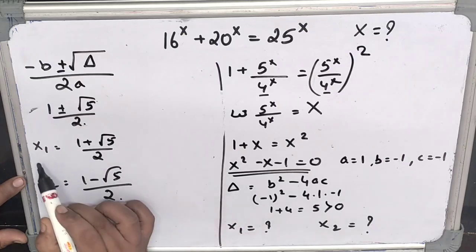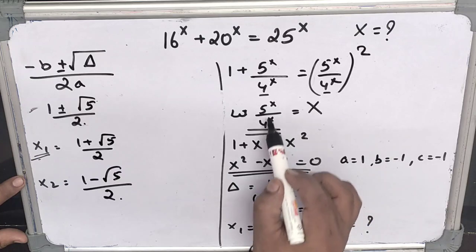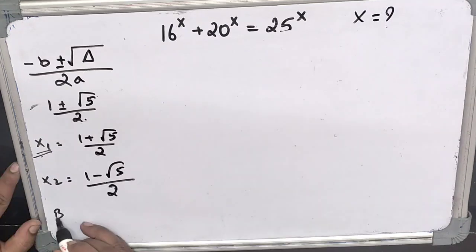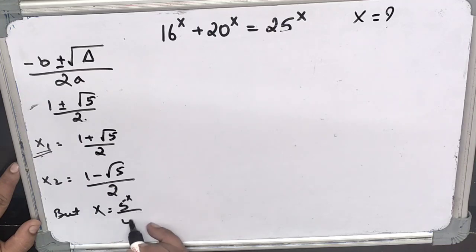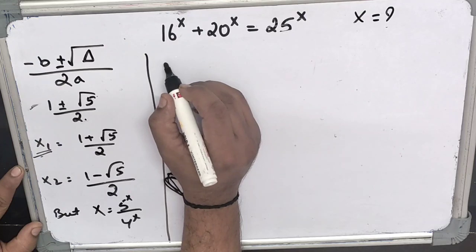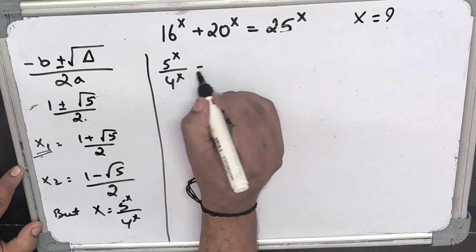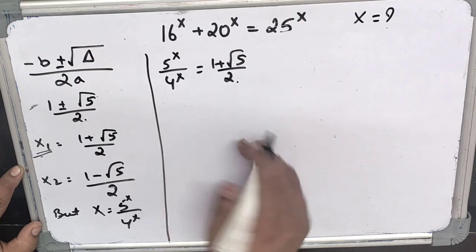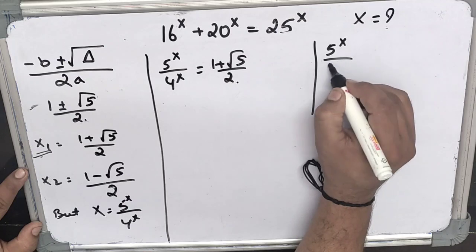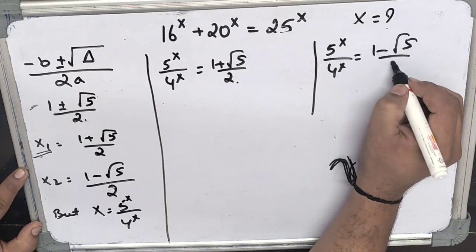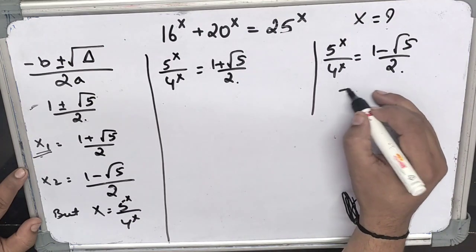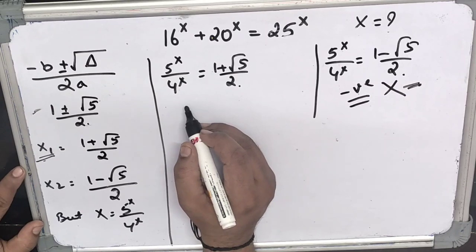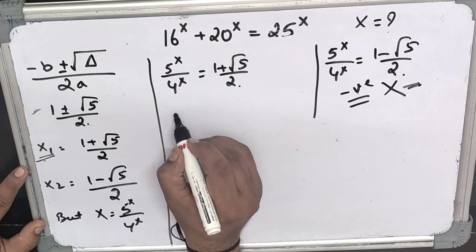Recall that we substituted X as (5/4)^x. So we substitute back: (5/4)^x equals (1 + √5)/2, and (5/4)^x equals (1 − √5)/2. The second value is negative, and since (5/4)^x cannot be negative, that solution is rejected.